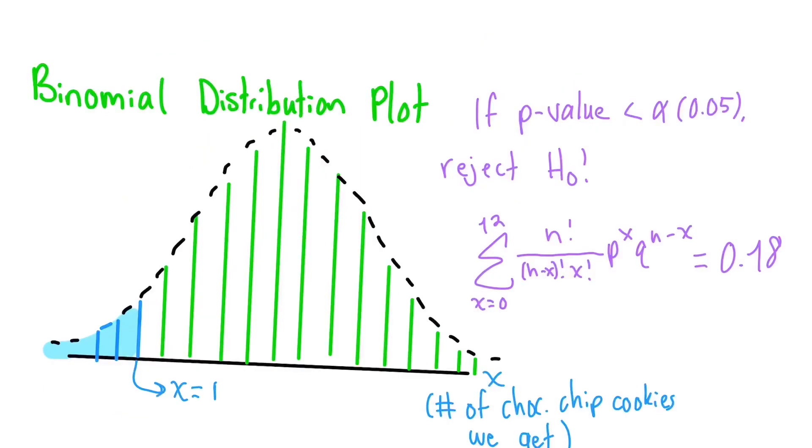If we do all the calculations we did before, but starting at 4 cookies instead of 12, we see that the chance of this happening, assuming that there's an equal number of both kinds, is only 0.003%.